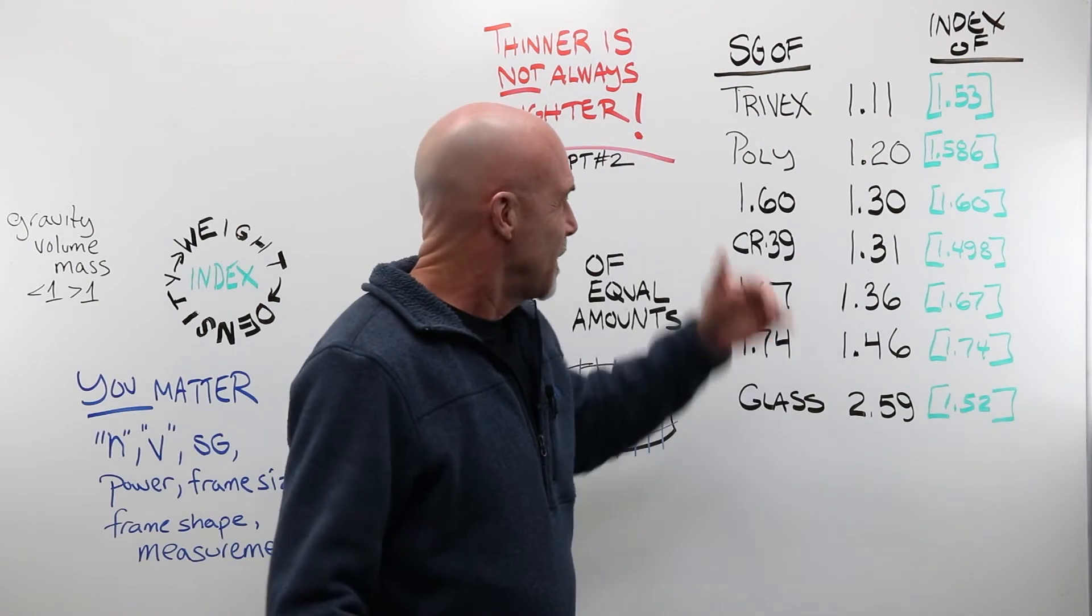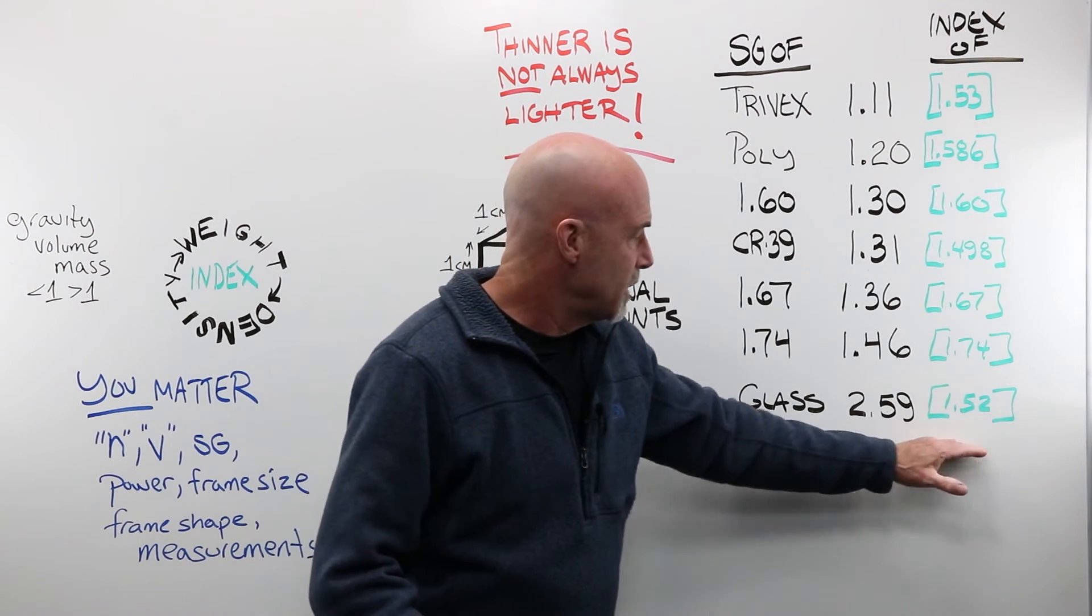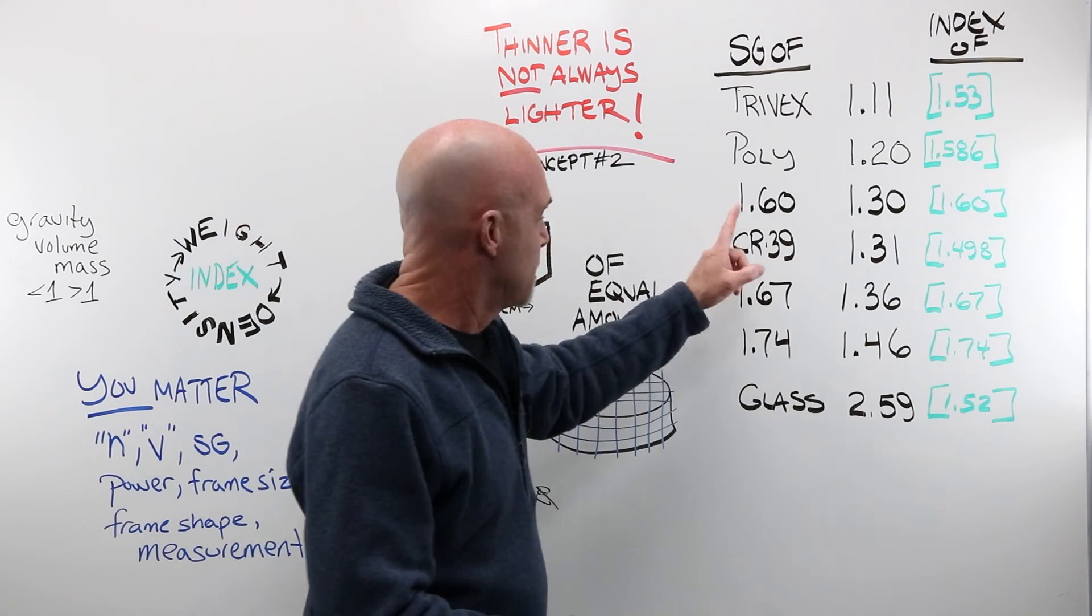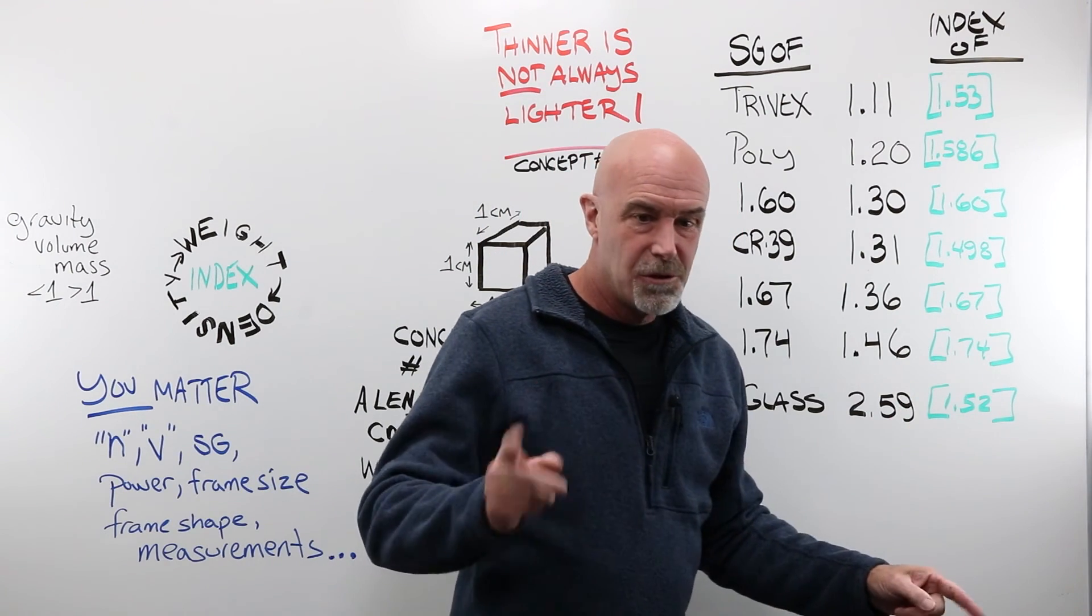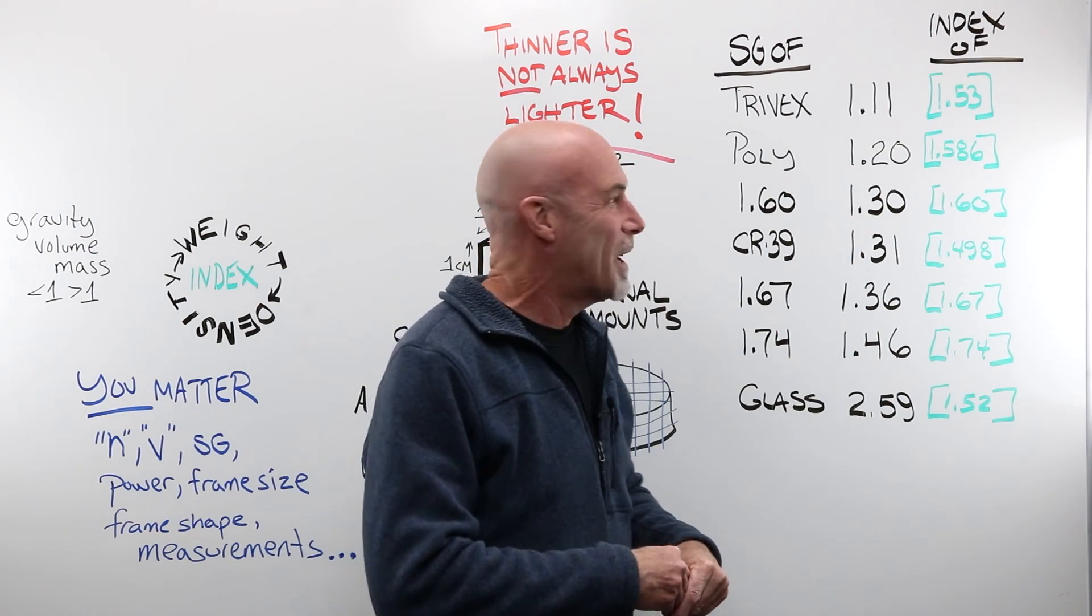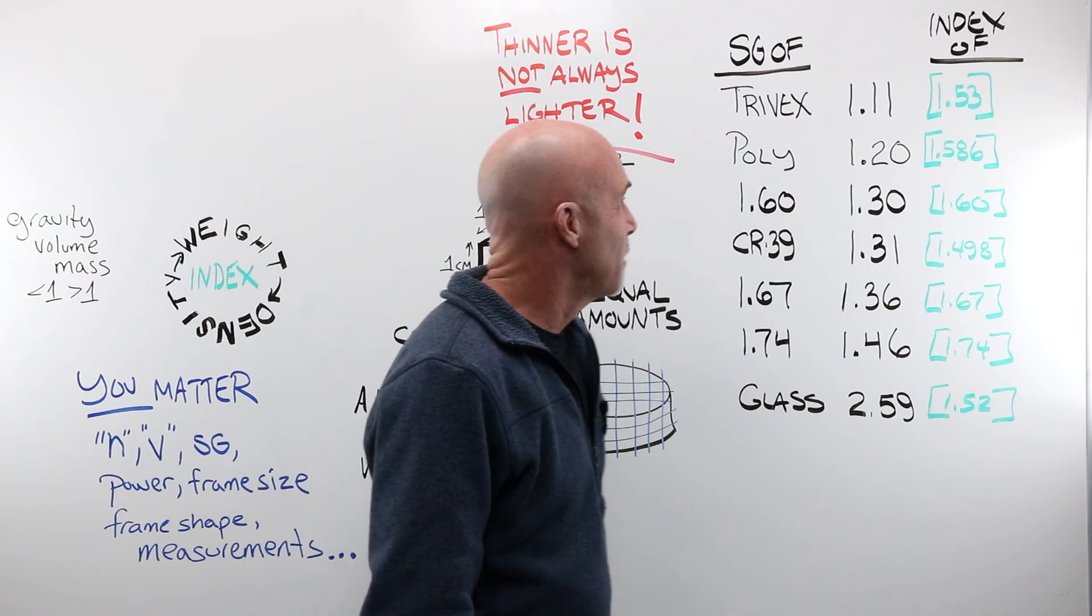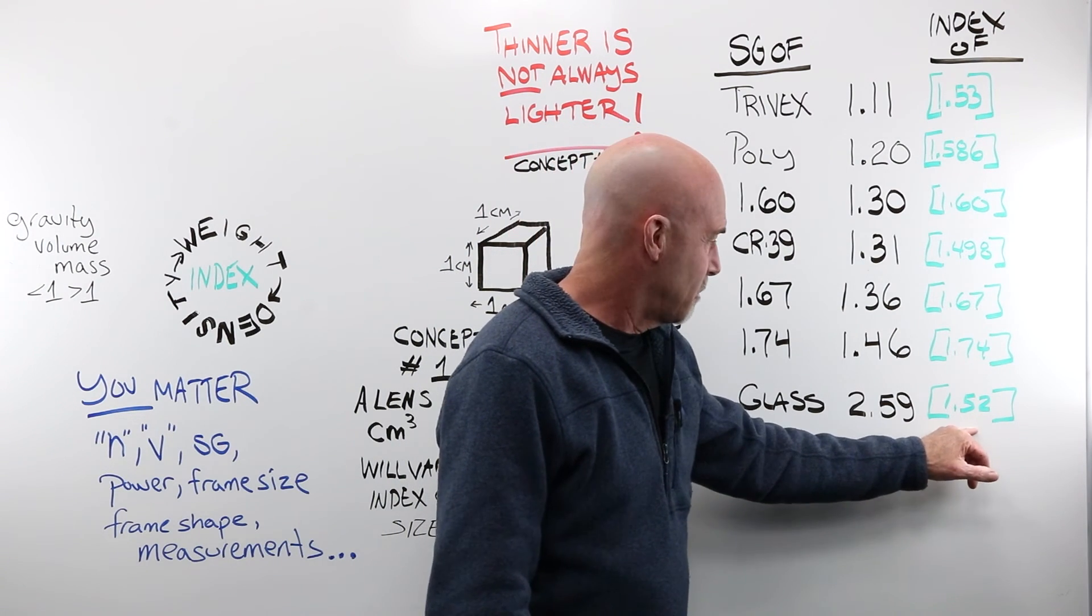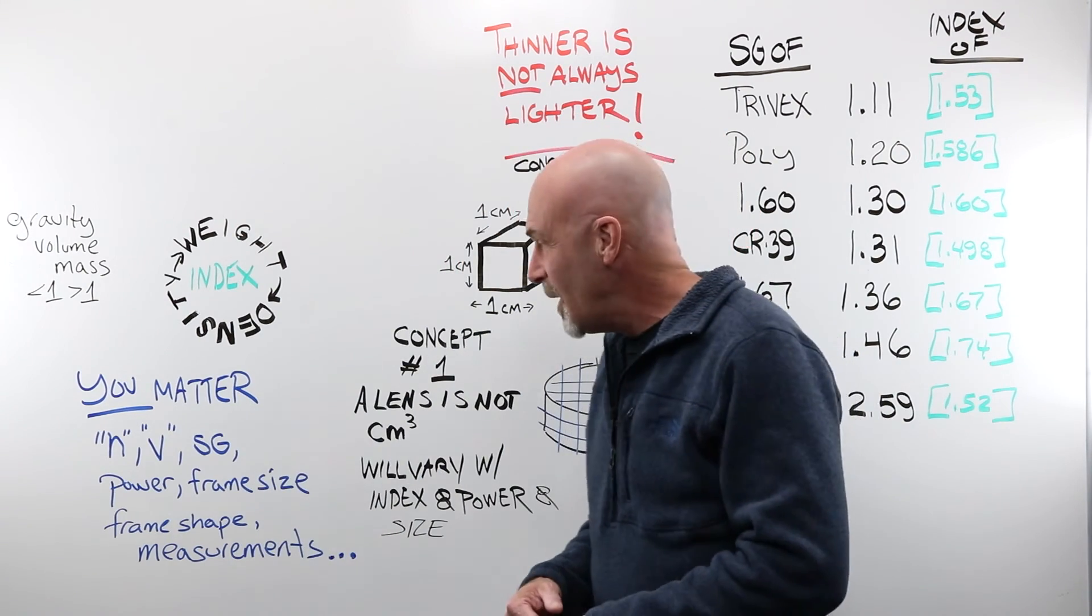And why did I bother to put the index of refraction up there? Well, as a reminder from our first lesson in this three-part series that specific gravity is about density, but density has little to do with index of refraction, although we sure do like to think about it that way. Remember our trivex? Not very dense, index of refraction of 1.53. Glass, extremely dense, index of refraction of 1.52. So keep that in the back of your mind as well.